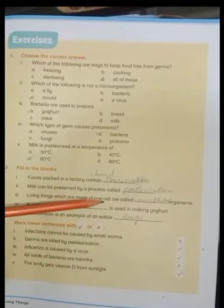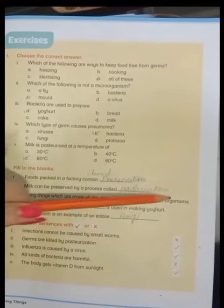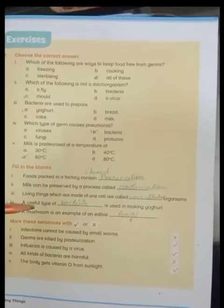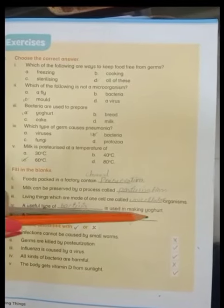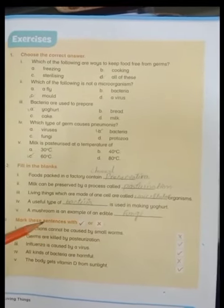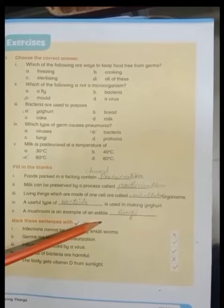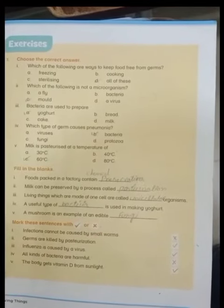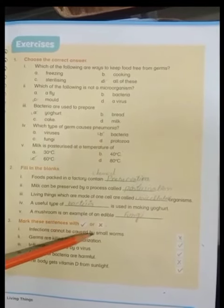Living things which are made of one cell are called unicellular organisms. A useful type of bacteria is used in making yogurt. A mushroom is an example of an edible fungi.